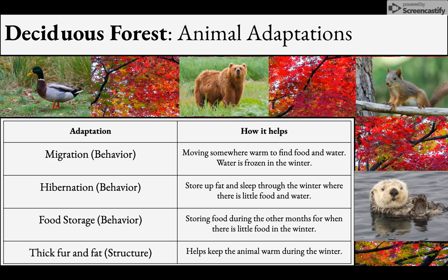Food storage is seen in animals like squirrels, shown in the top right of your screen — they store up food when it's abundant so they have a supply to eat during the winter. Then there are structural adaptations, which are things actually on the animal's body — like thick fur or a layer of fat, like the otter on your right. This helps keep the animal warm during the winter.